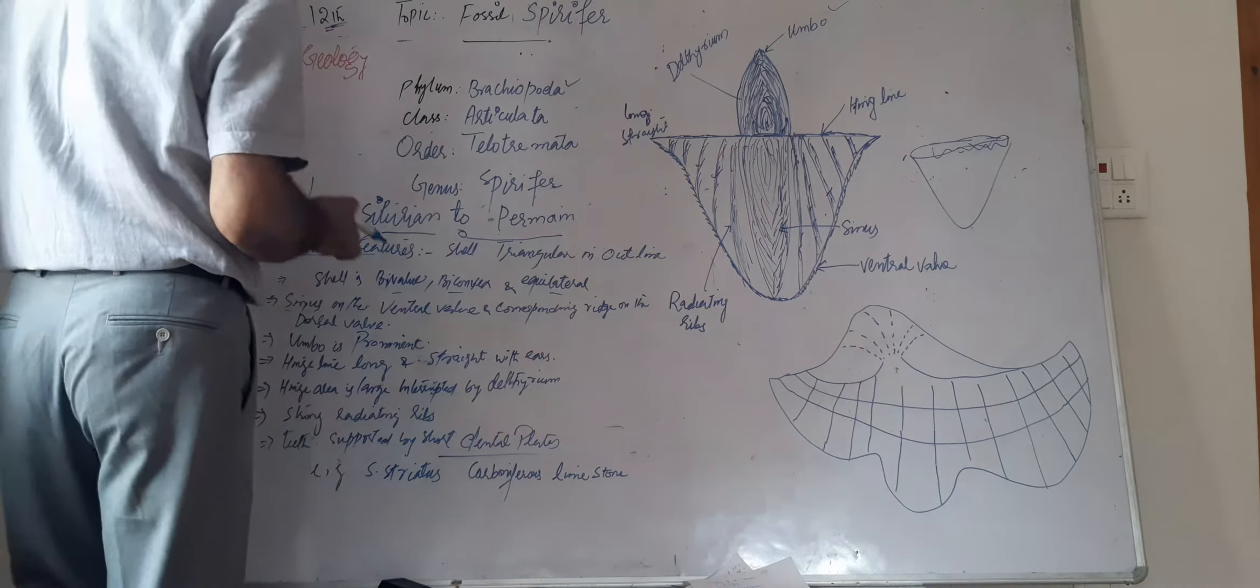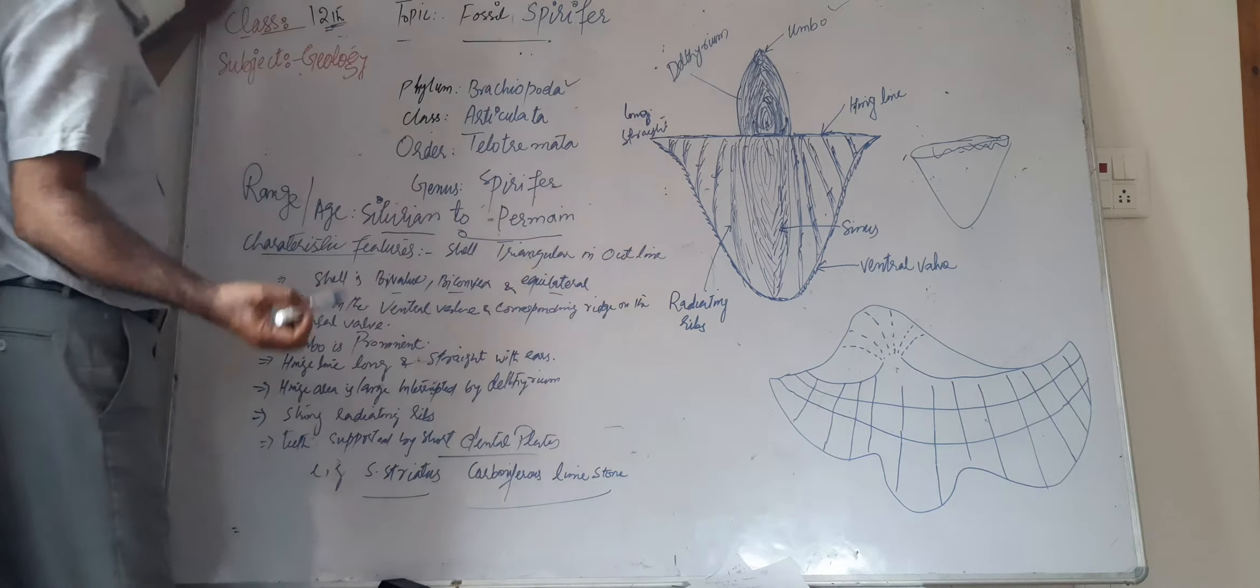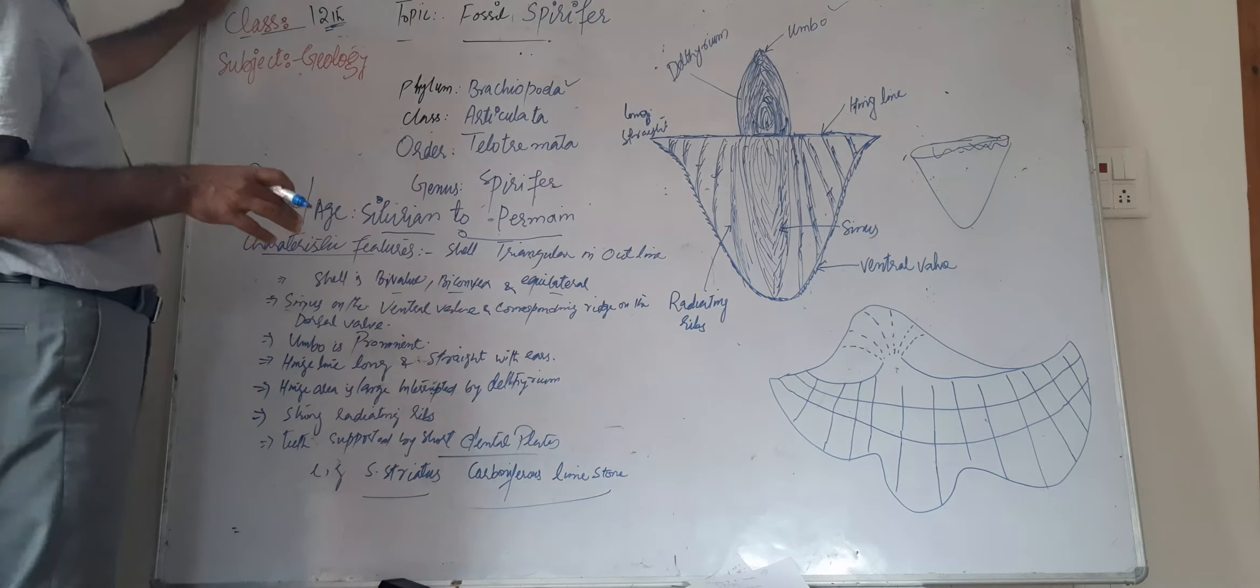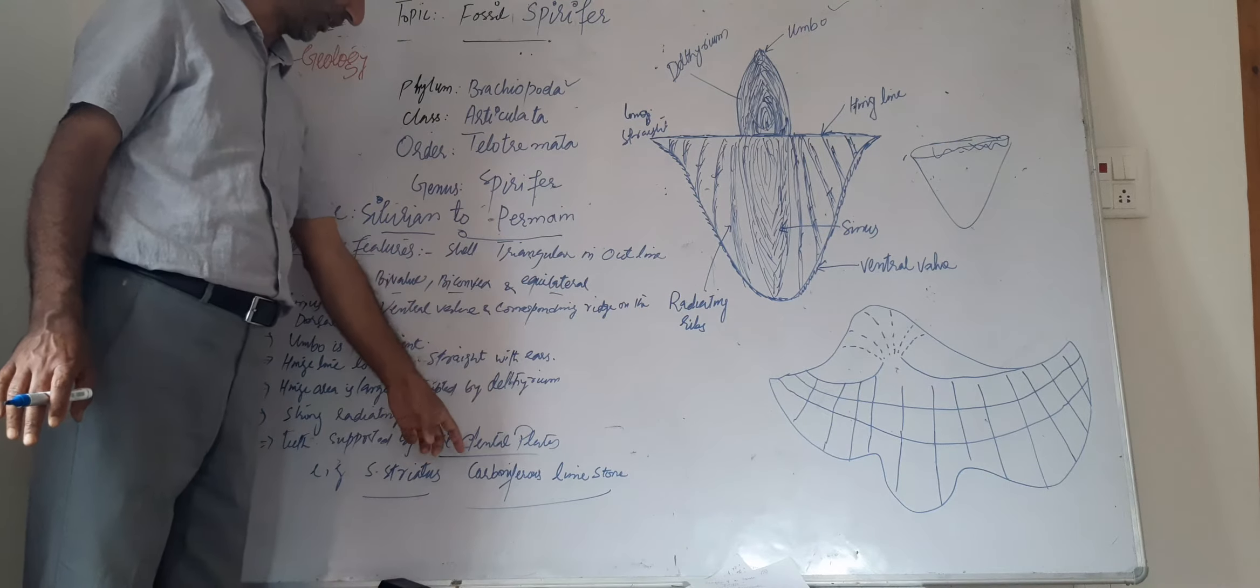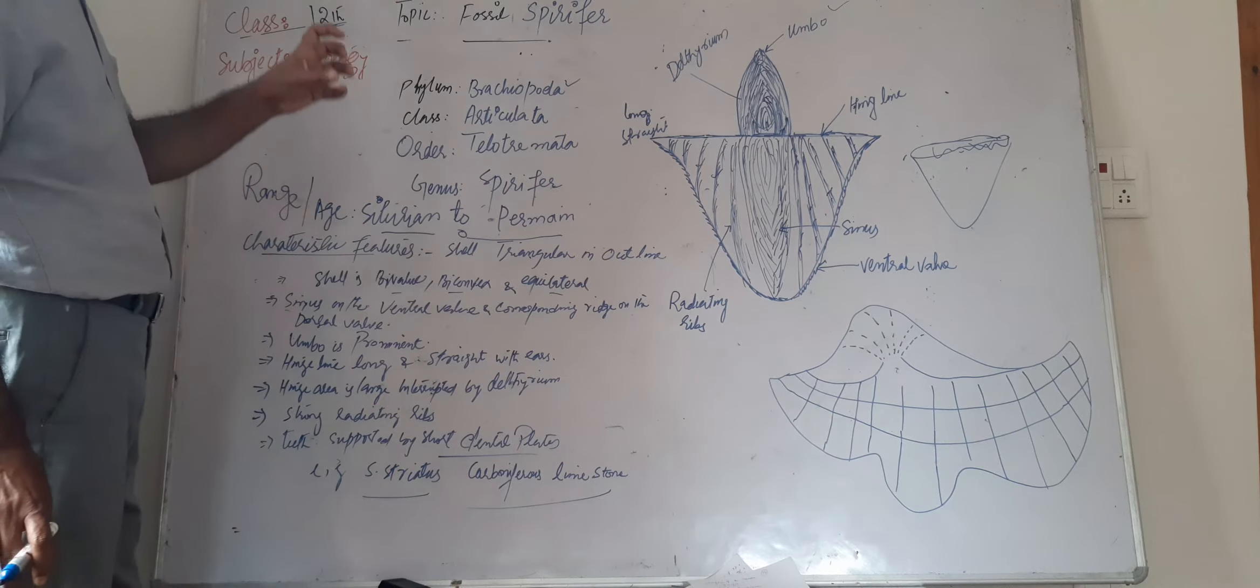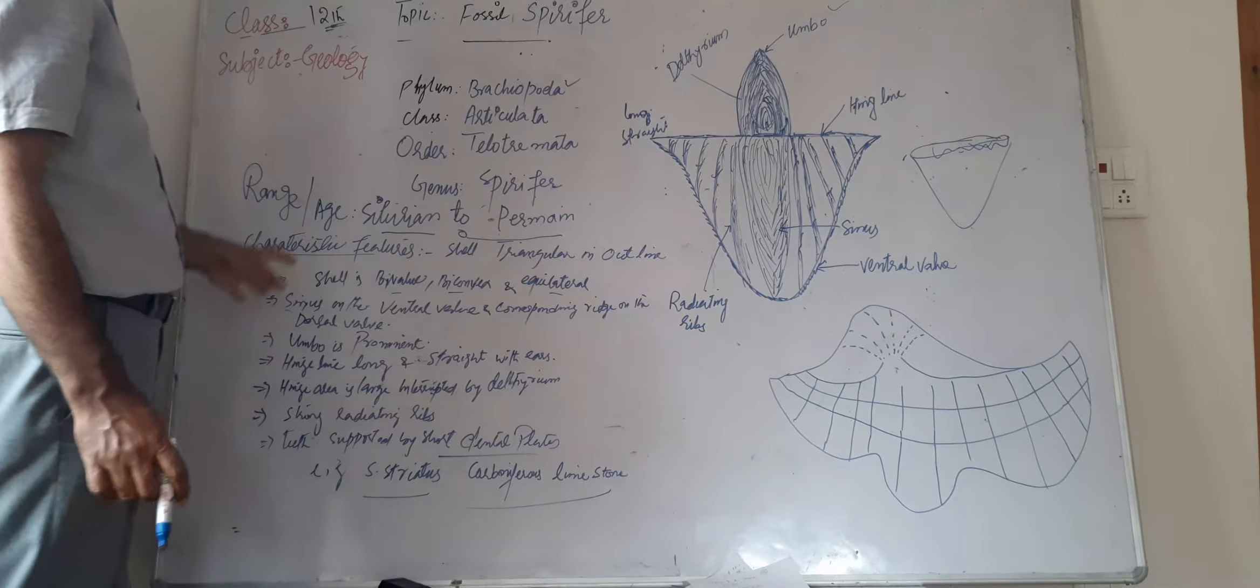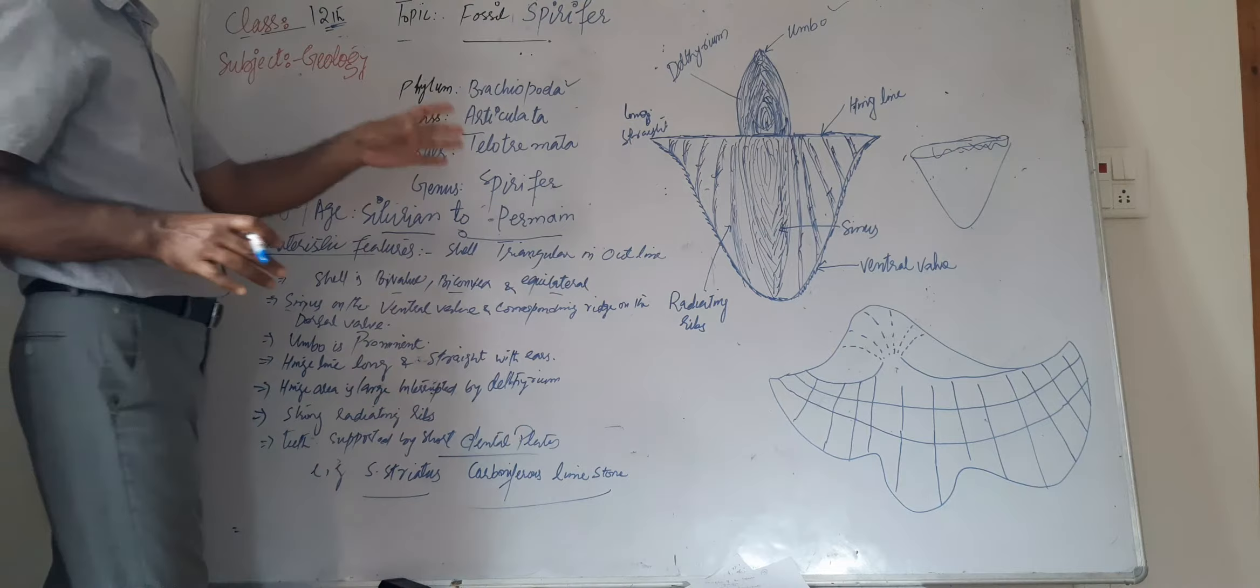For example, Citritus, which is shown in carboniferous limestone. In carboniferous age, especially in sedimentary rock limestone, almost all the shells are found in limestone. But this Citritus shell have been found in carboniferous limestone and which represents these all features which we have discussed.